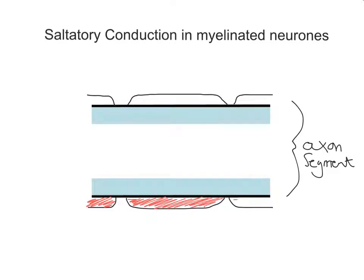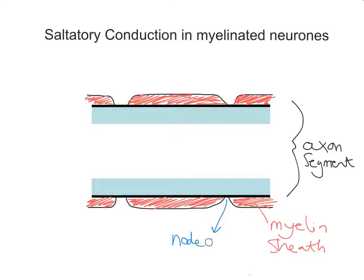So this region here is known as the myelin sheath. So this region here is myelin sheath. And the gaps that you see between them, so just right there for example, this is known as a node, or more specifically, a node of Ranvier. So that's the technical name of that region there.